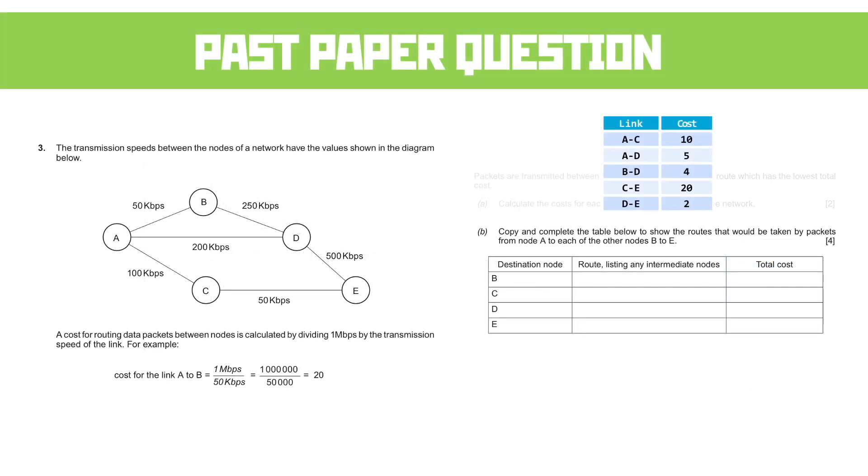Now, leaving that on the screen for us a minute, because our next question is about calculating the shortest route between different nodes. We're going from A to the other nodes, and we want to find the shortest route. Now, our diagram as it stands isn't much use to us. So if I was in the exam, what I'd be doing is I'd be crossing out all those kilobits per seconds numbers, and I'd be writing on there the cost that we've just worked out, just like I've done here. This makes it much easier to work out the shortest costs, because everything is now in the same units.